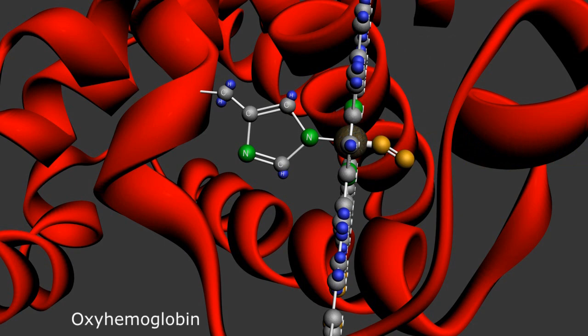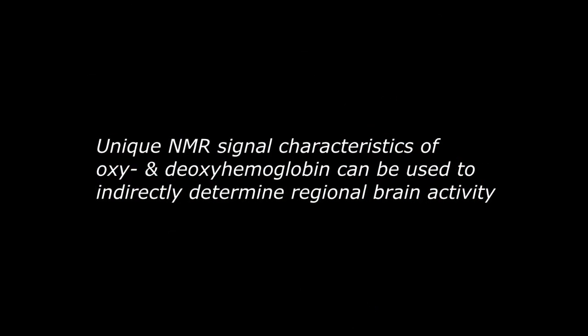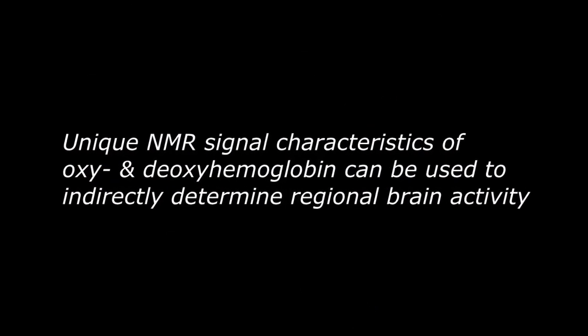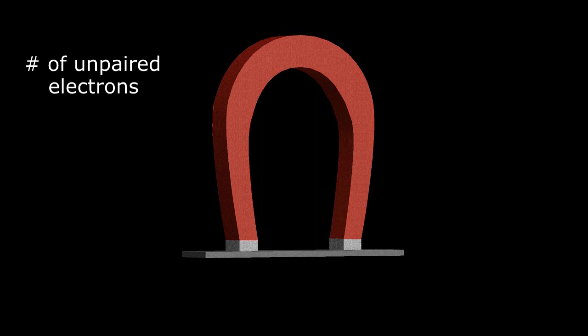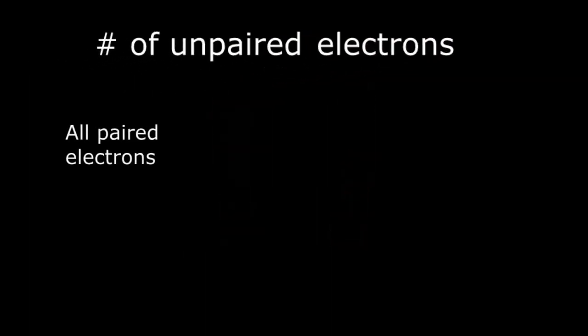Fortunately, for functional MRI, there is a different NMR signal for oxy- and deoxyhemoglobin which we can utilize to help determine regional brain activity. The magnetic properties of an element or a molecule is largely influenced by the number of paired or unpaired electrons in the valence shell.